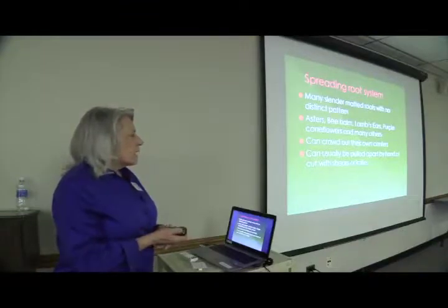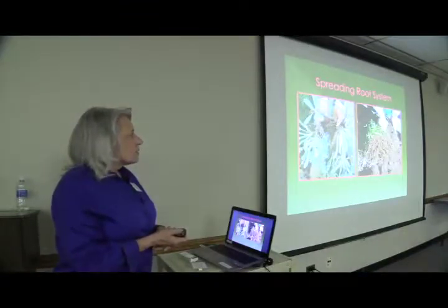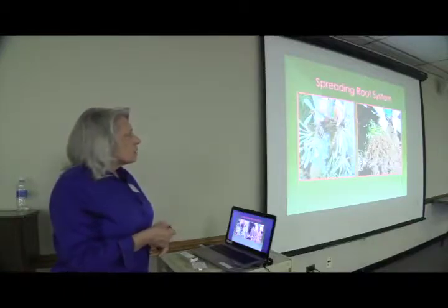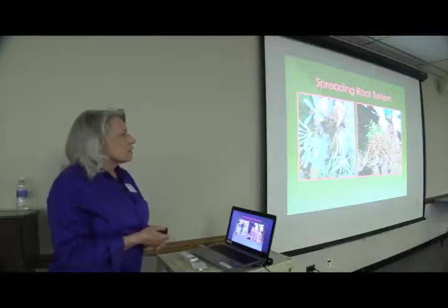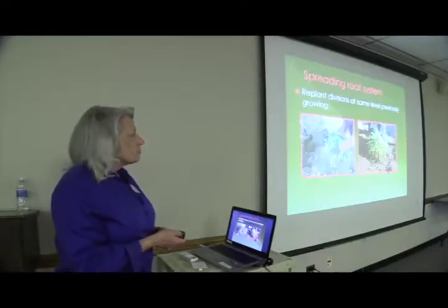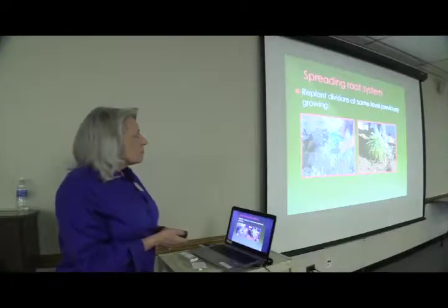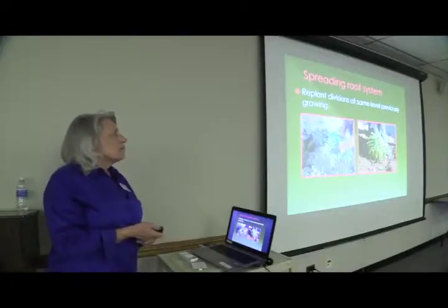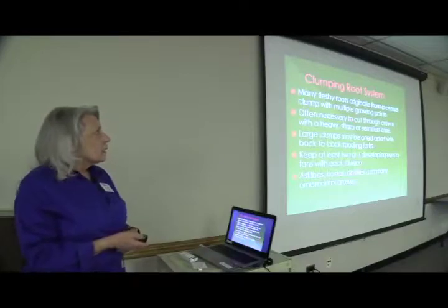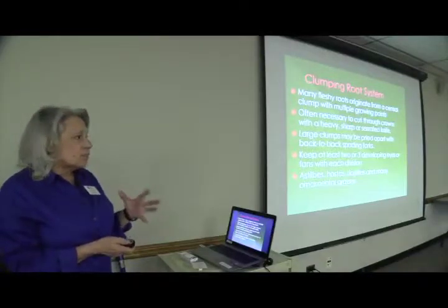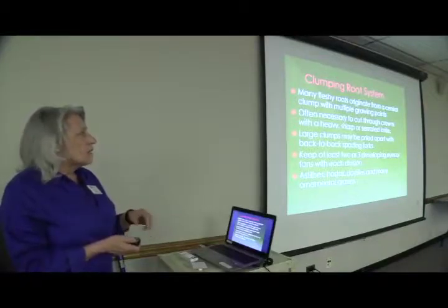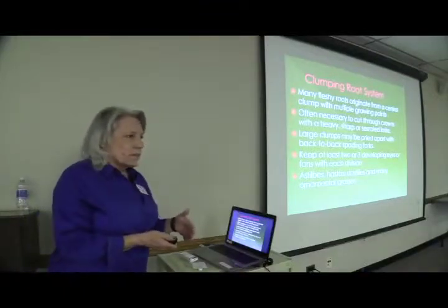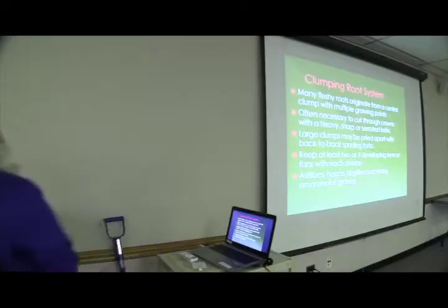Replant divisions at the same level they were previously growing. The clumping root system has lots of fleshy roots that originate from a central clump with multiple growing points. It's often necessary to cut through the crowns with a heavy, sharp, or serrated knife. Here's a serrated knife — it looks a little bit like a weapon, but it's a good thing to have in the garden. This serrated edge is excellent for cutting apart clumpy roots.